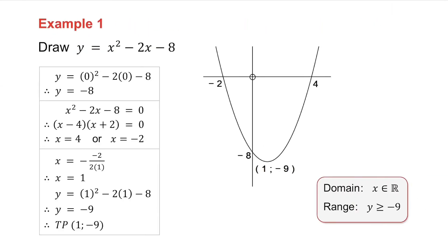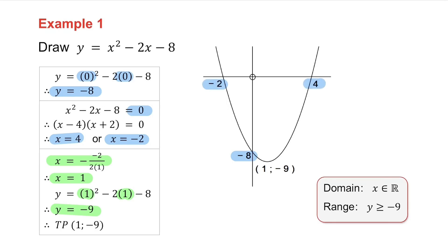The first graph is a parabola. To find your y-intercept, make x equal to 0 and you get a y-intercept of minus 8. To find your x-intercepts, make y equal to 0 and you get x equals 4 or minus 2. To get your axis of symmetry, use the formula x equals minus b over 2a, getting the b and a values from the original equation, giving x equals 1. Substituting back gives y equals minus 9. So the y-intercept is minus 8, the x-intercepts are 4 and minus 2, and the turning point is (1, minus 9).